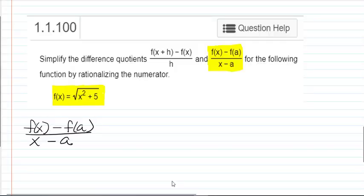This is part two of two sequence videos on simplifying difference quotients. In part one, we looked at f of x plus h minus f of x over h. And now we're going to do a different version of the difference quotient, f of x minus f of a over x minus a. We're still using the function f of x equals the square root of x squared plus 5.